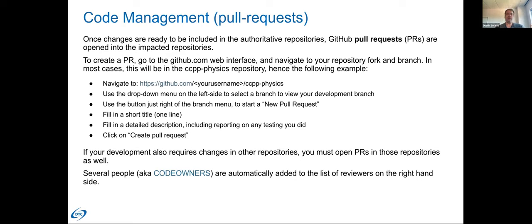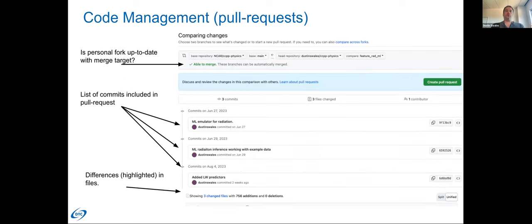These repositories all live within a hierarchical organizational system of code management. Through GitHub, we call these submodules, dependencies, or external dependencies. If your change happens to be in a component of a larger model — say the single column model — you will also have to open a pull request not only into the physics for physics changes, but also into the single column model. Similarly, on a larger model side like the UFS, you will have to open up pull requests into any component affected by your changes.